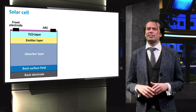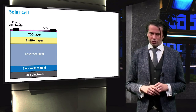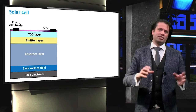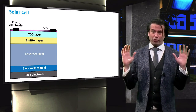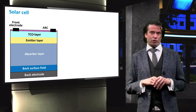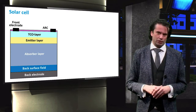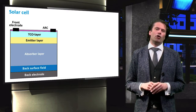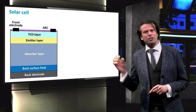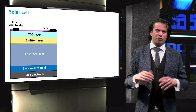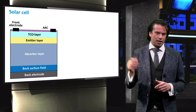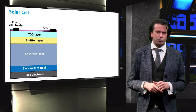Shown here is a standard silicon wafer based solar cell. These are the most common type of solar cells, accounting for about 93% of the total production in 2015. We will base this solar cell on a p-type silicon absorber, even though some silicon cells can be made with an n-type absorber layer as well.